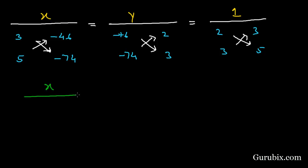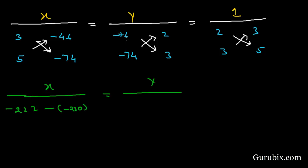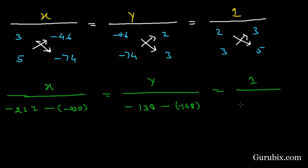For X, we multiply 3 with −74 to get −222, then subtract the product of −46 with 5, which is −230. For Y, we multiply −46 with 3 to get −138, then subtract the product of 2 with −74, which is −148.